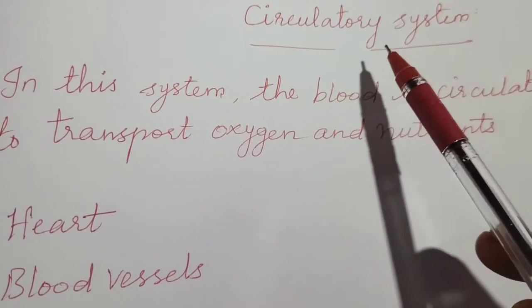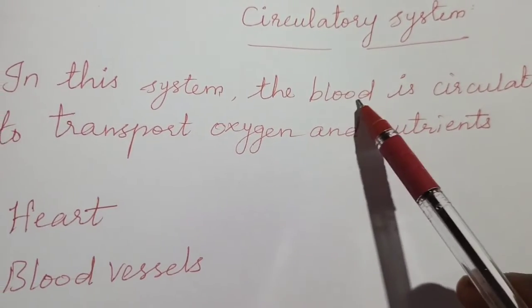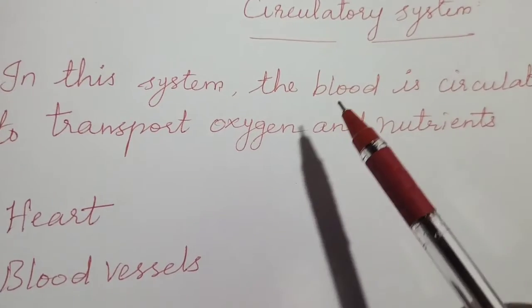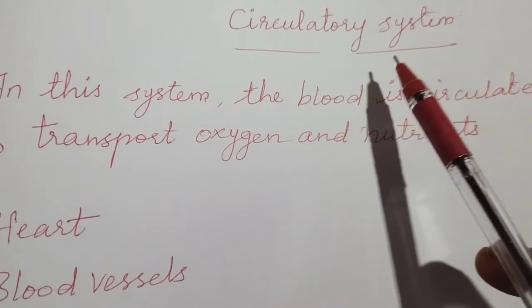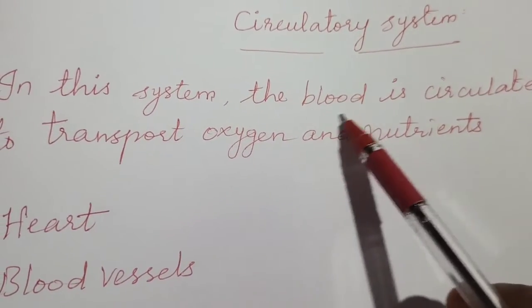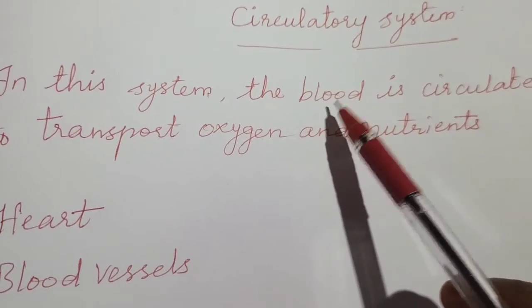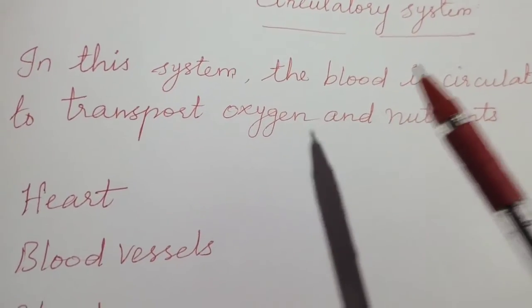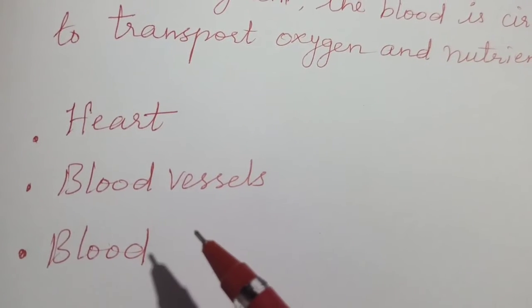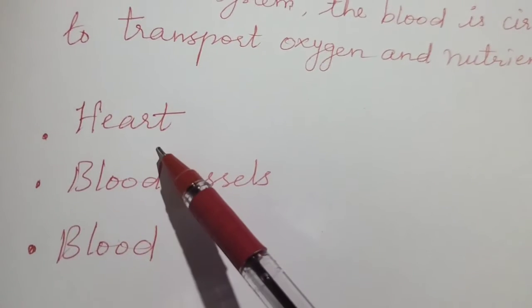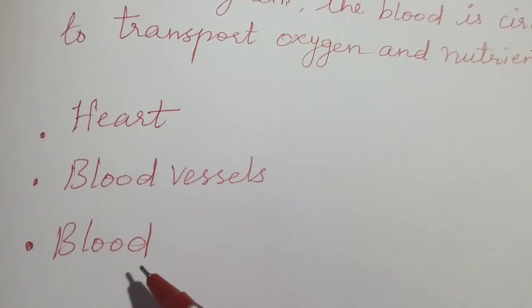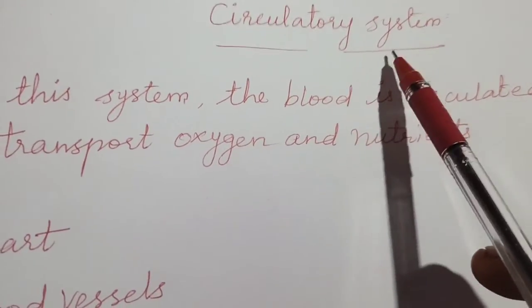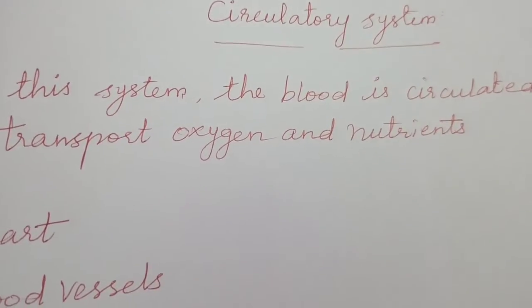What is the circulatory system? The circulatory system supplies blood to all the parts of our body. The blood transports oxygen and nutrients to all parts of the body. The organs involved in the circulatory system are the heart, blood vessels, and blood.